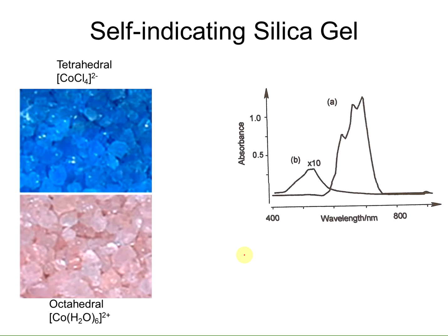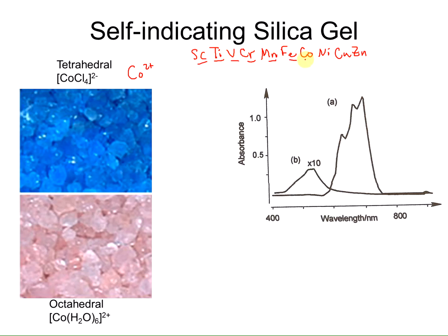Let's look at a cobalt 2+ tetrahedral complex. Cobalt is the seventh element in the first row of transition metals — scandium, titanium, vanadium, chromium, manganese, iron, cobalt, nickel, copper, zinc — so cobalt 2+ gives us a D7 configuration. For the tetrahedral case, filling 7 electrons gives us three unpaired electrons. For the octahedral case with water as the ligand, water is always high spin — especially in the 2+ oxidation state — and filling 7 electrons also gives three unpaired electrons.